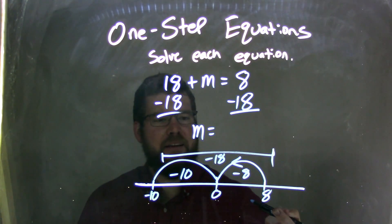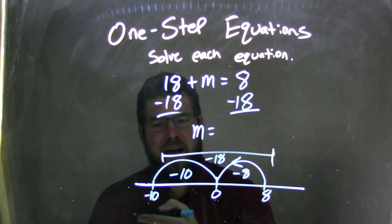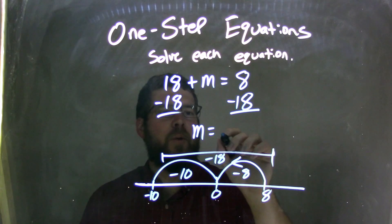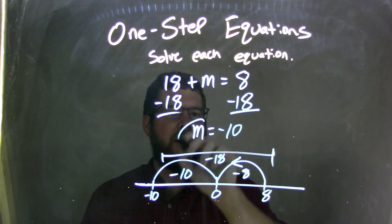Well, subtracting another 10 gets me to negative 10. So 8 minus 18 is really 8 minus 8 minus 10. Well, 8 minus 8 is 0, minus 10 is negative 10, so m equals negative 10 is my final answer.